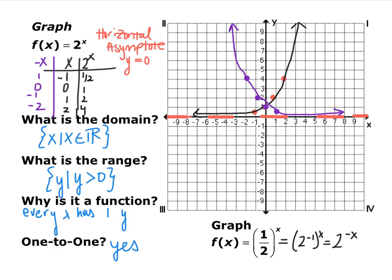If we apply our transformation, remember a negative x reflects you across the y axis. So all these points are just reflected across. The negative 1 becomes a positive 1, 0 stays the same, 1 becomes negative 1, 2 becomes negative 2. So you end up with this graph right here as y equals 1 half to the x or 2 to the negative x.